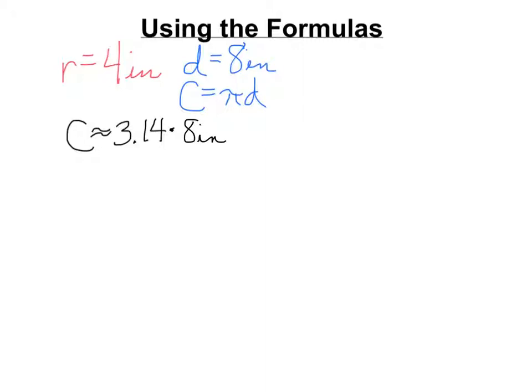A little bit of scratch work. 3.14 times 8. 8 times 4 is 32. Carry the 3. 8 times 1 is 8, plus 3 is 11. Carry the 1. 8 times 3 is 24, plus 1 is 25. This has 2 decimal places. This has none for a grand total of 2 decimal places. So, I put the decimal right there. So, 3.14 times 8 inches equals 25.12 inches. And there's my circumference.